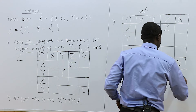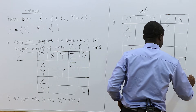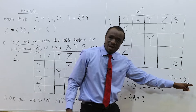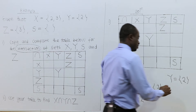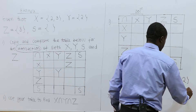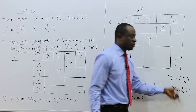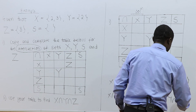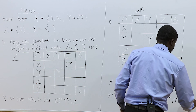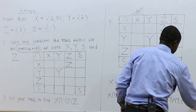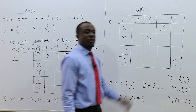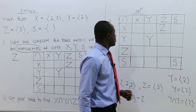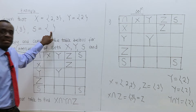Now, Y intersection Y. What is Y? Y is the set {2}. So Y intersection Y — the common element is 2, and this is the same as Y. That is why we have Y in that cell.